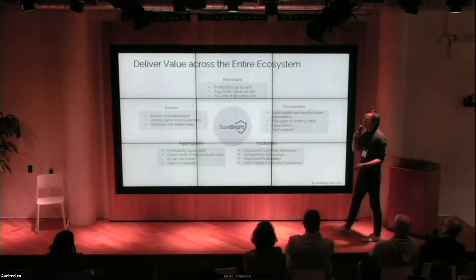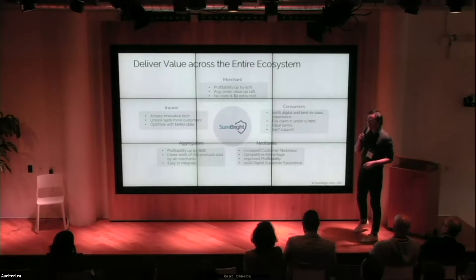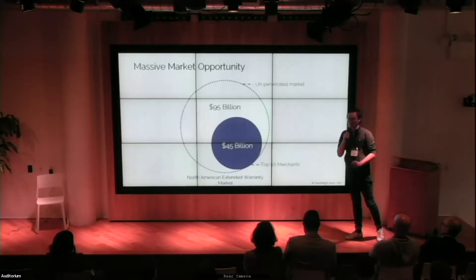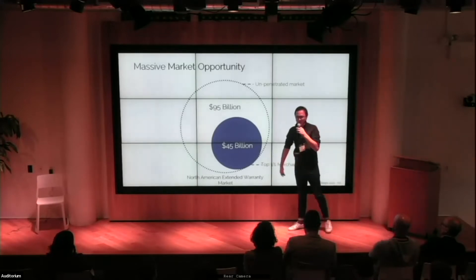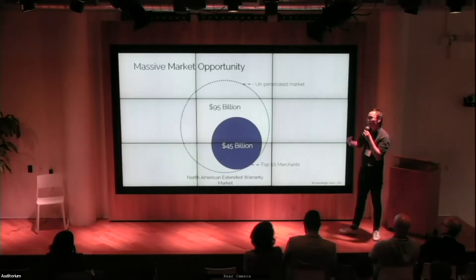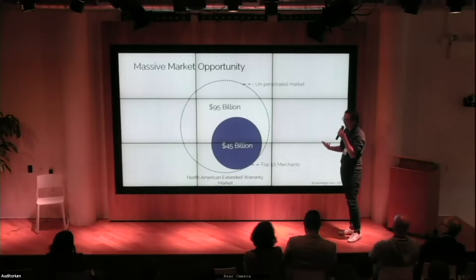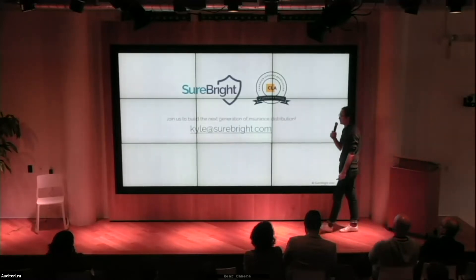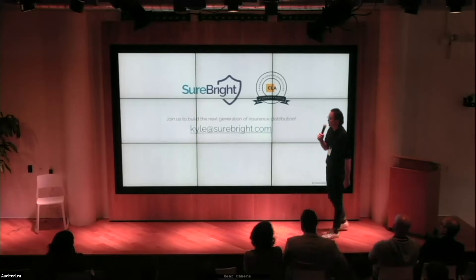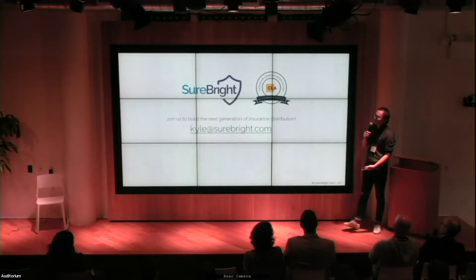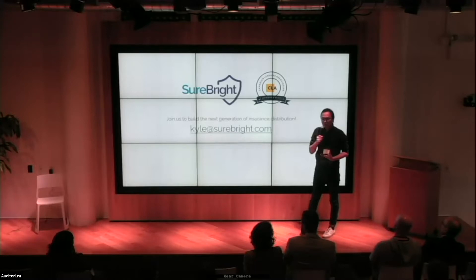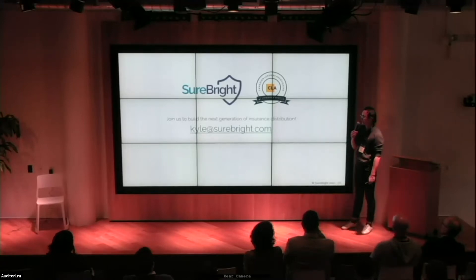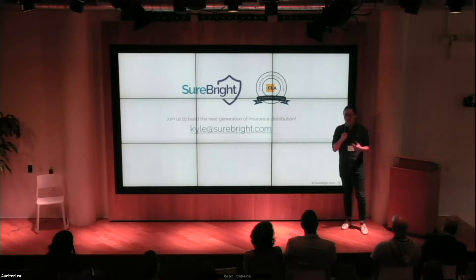Our secret sauce is our product data analytics — we provide SKU and product category-level analytics so you can improve your risk models and sales planning. We deliver value across the whole ecosystem: merchants, insurers, consumers, aggregators, and neobanks. The top 1% of the external warranty market is $45 billion, occupied by big box retailers like Best Buy. With our platform, we can expand that market to $95 billion by targeting the rest of e-commerce merchants. We've already raised our $3.2 million seed round and are looking to connect with more insurance partners, specifically in specialty insurance, creditor insurance, cardholder insurance, and accident and illness insurance.